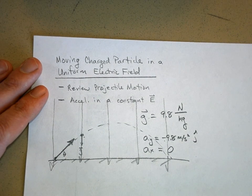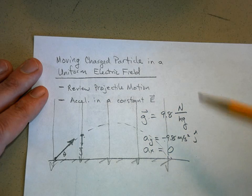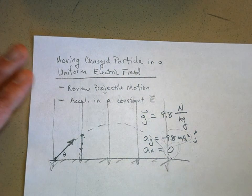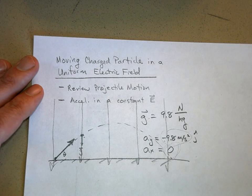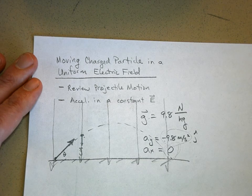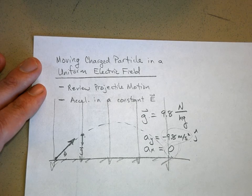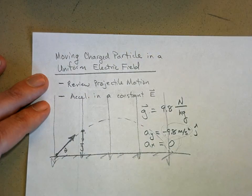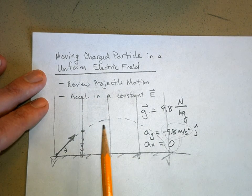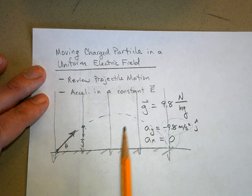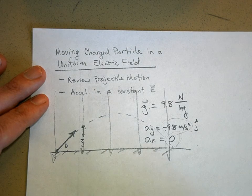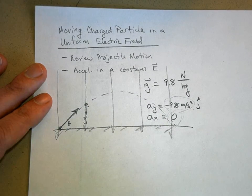The acceleration in the y direction is constant, and zero is a constant as well, so you can apply the kinematic equations for constant acceleration in both the x and y directions. Now, what if we created a uniform electric field? How do you do that?